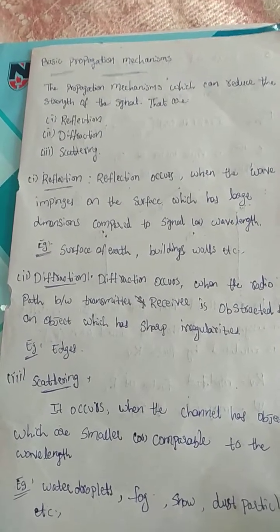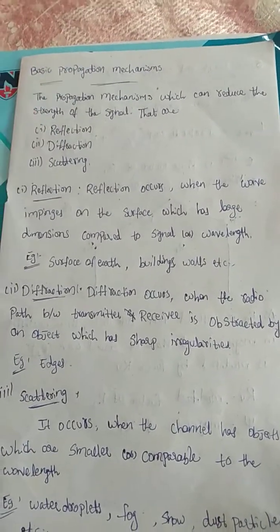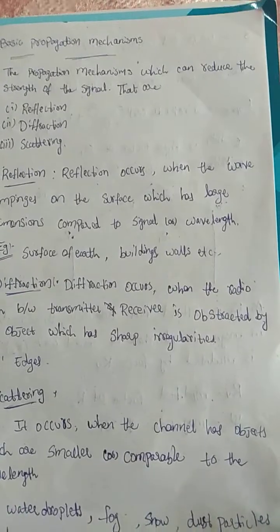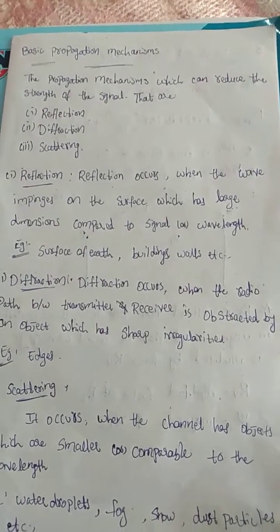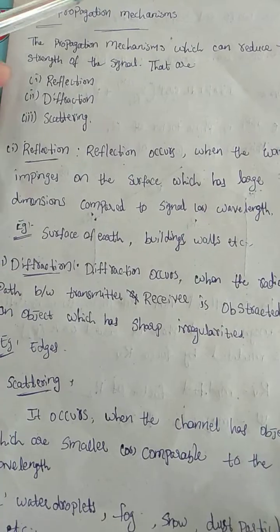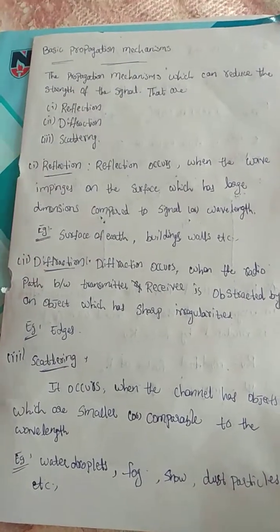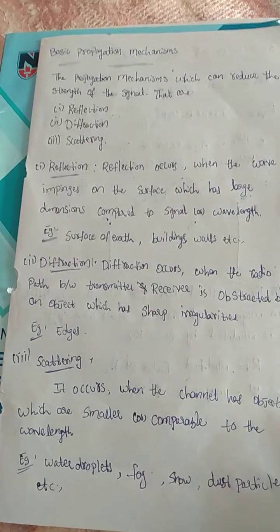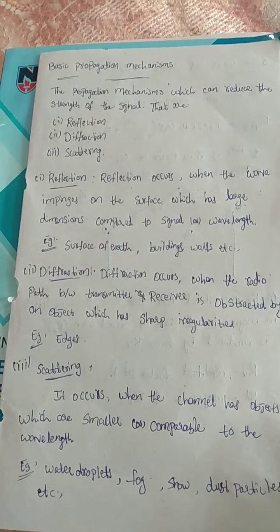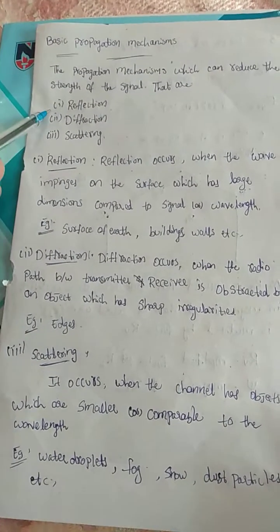Today we are going to discuss two topics: basic propagation mechanisms and space waves and surface waves. The basic propagation mechanisms are those which reduce the strength of the signal. When the transmitter transmits a signal, it travels through the channel. There are three basic propagation mechanisms which can reduce signal strength: reflection, diffraction, and scattering.